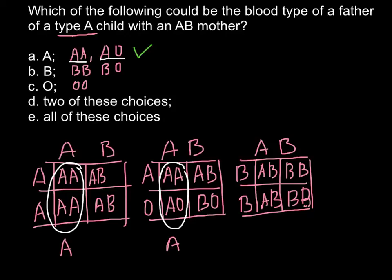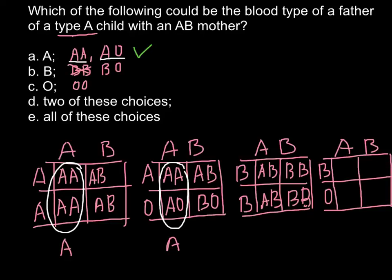But genotype BO, let's build a Punnett square once again. BO genotype would produce our desirable phenotype for the child. So here we would have AB and BB here, AO here, and BO here.